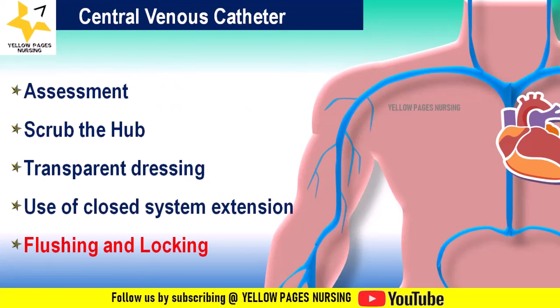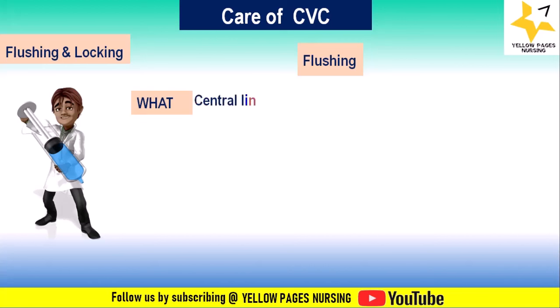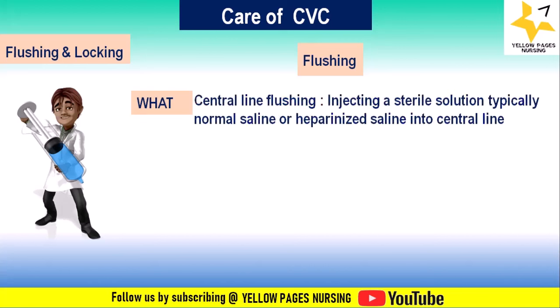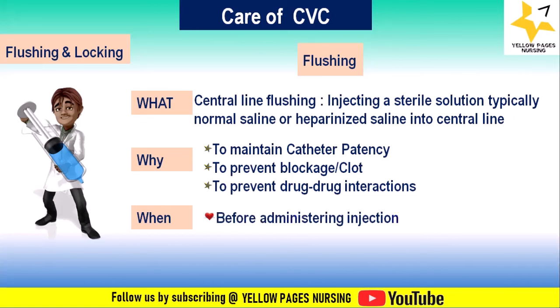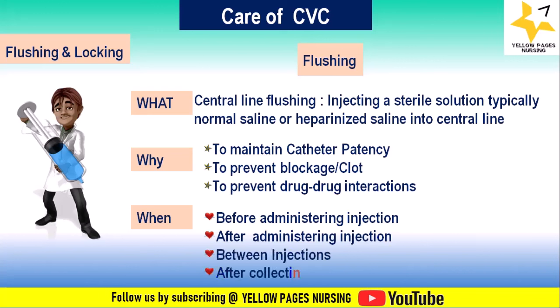Next is flushing and locking. Central line flushing means injecting a sterile solution — typically normal saline or heparinized saline — into the central line. Flushing is done to maintain catheter patency, prevent blockage or clots, and prevent drug-drug interactions. Flushing is performed before administering injections, after administering injections, between injections, and after collecting blood samples. IV locking — also called saline lock — is for intermittent catheters not currently in use but left in place for future access; it is recommended to flush and lock them after each use to maintain patency and prevent occlusions.